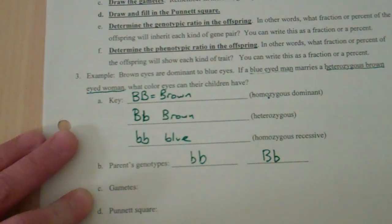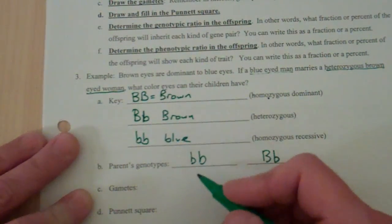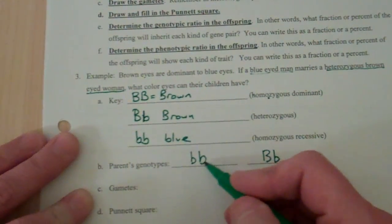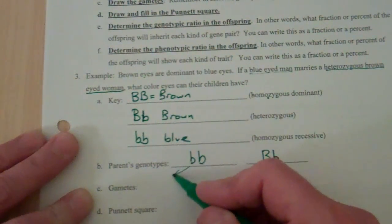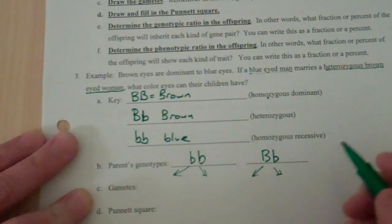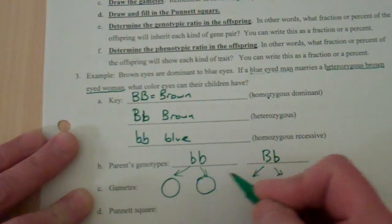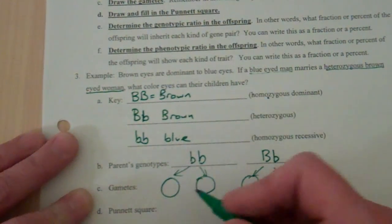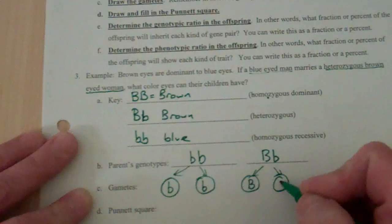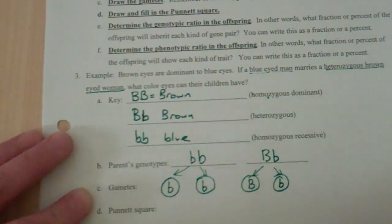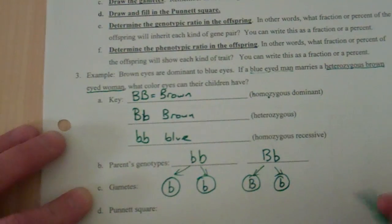Now remember, Mendel said that these pairs of genes, these alleles, are going to separate and go into separate sex cells during meiosis. So the way we're drawing our sex cells is with circles, and we write one letter in each sex cell. So you split those gene pairs apart, and we have our sex cells now.